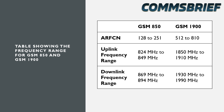And finally, the 850 and 1900 frequency bands — these are the bands that are used in North and South America. In the 850 band, the uplink ranges from 824 MHz to 849 MHz, then there's a gap, and the downlink ranges from 869 MHz to 894 MHz. In the 1900 band, the uplink ranges from 1850 MHz to 1910 MHz, then there's a gap, and the downlink ranges from 1930 MHz to 1990 MHz.